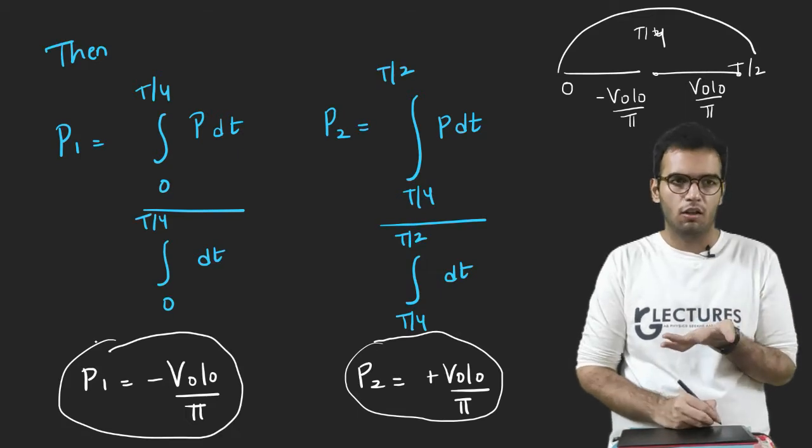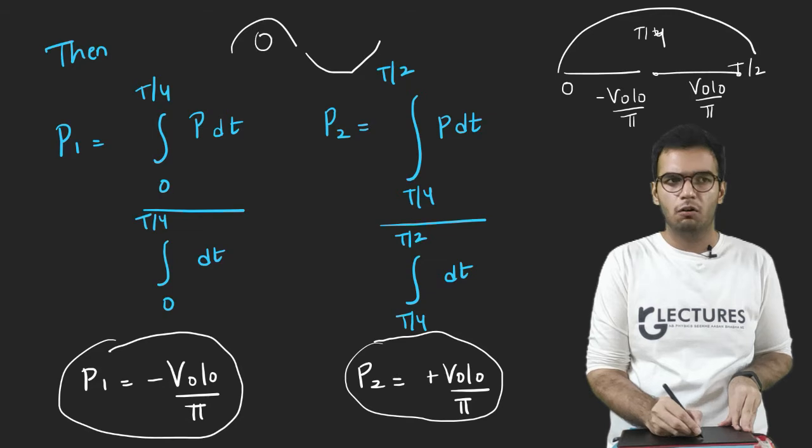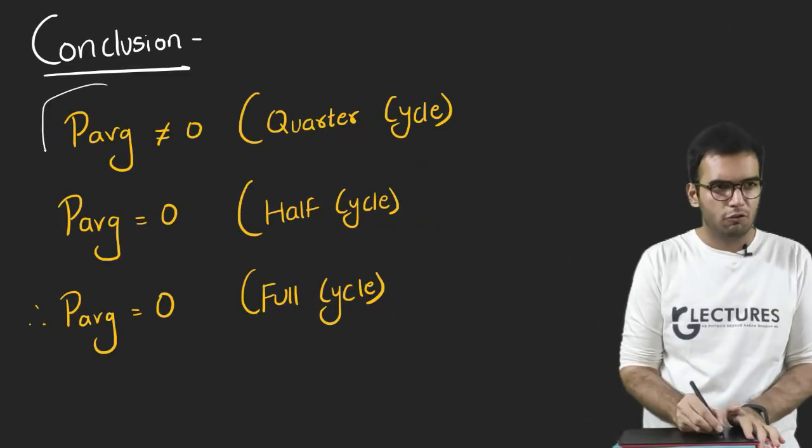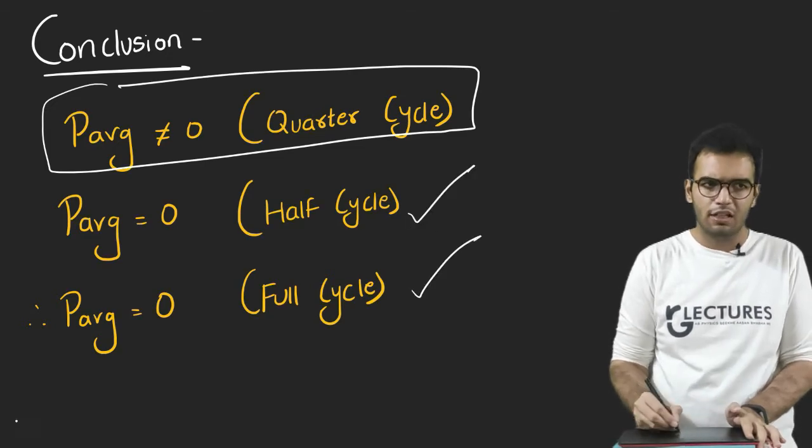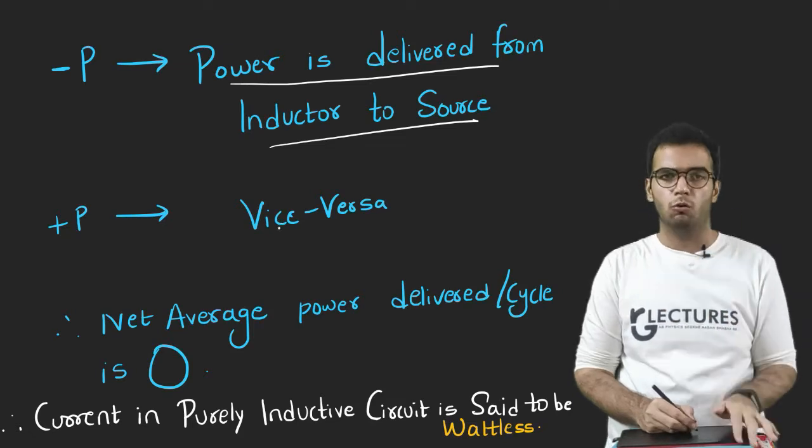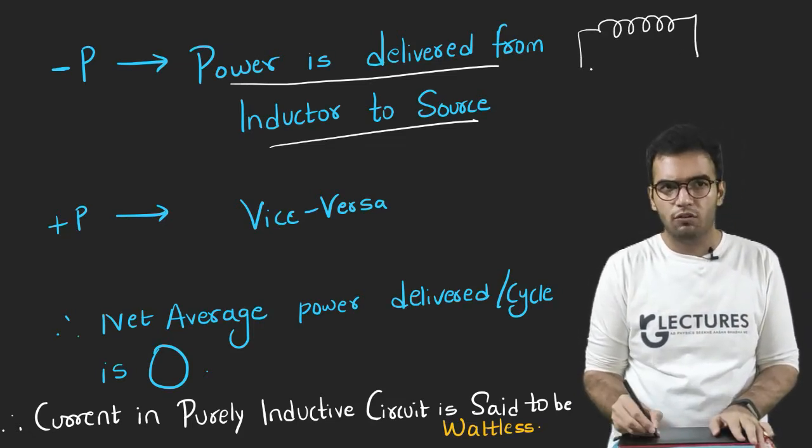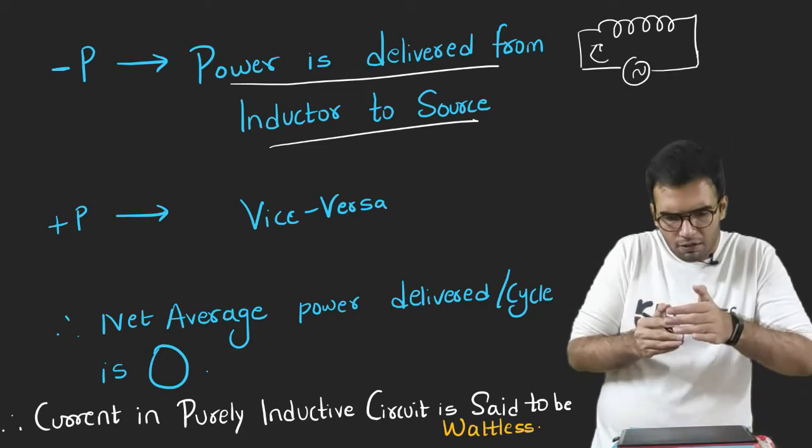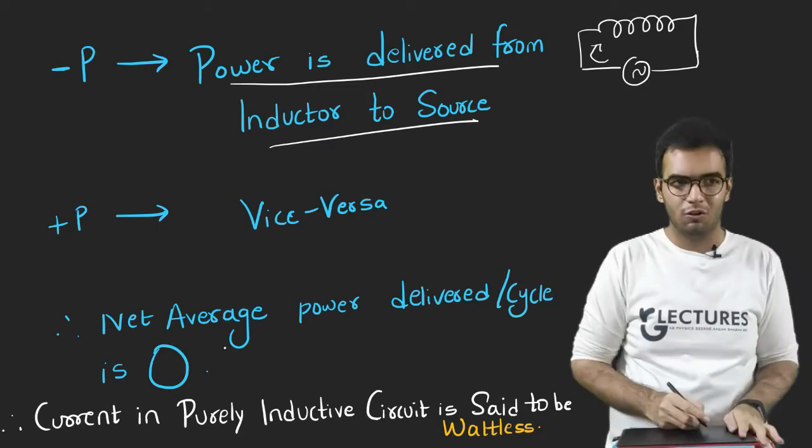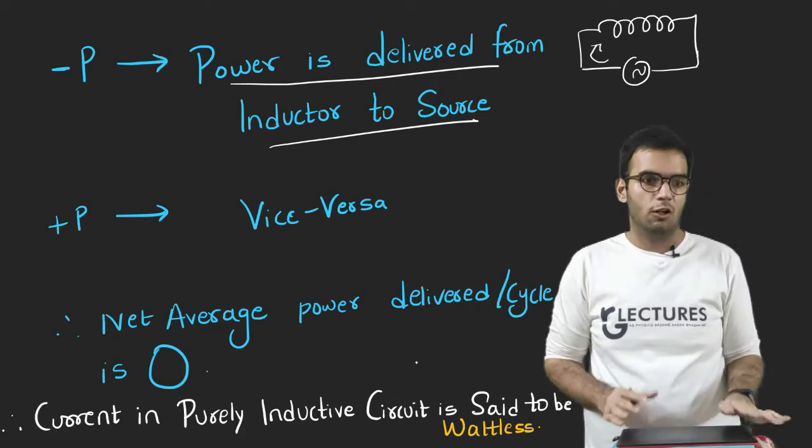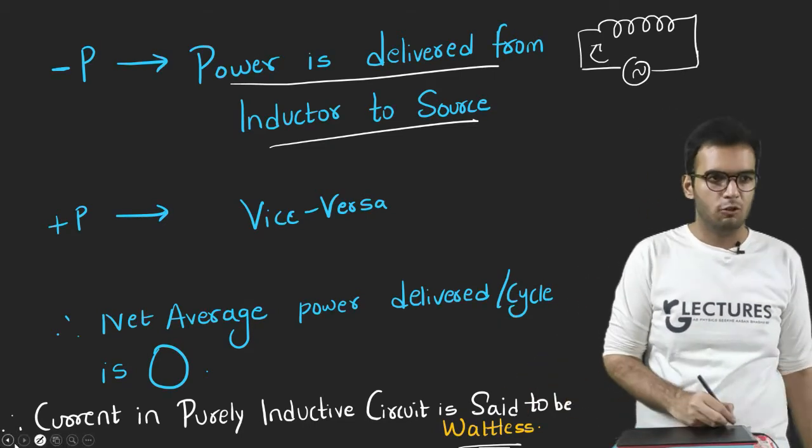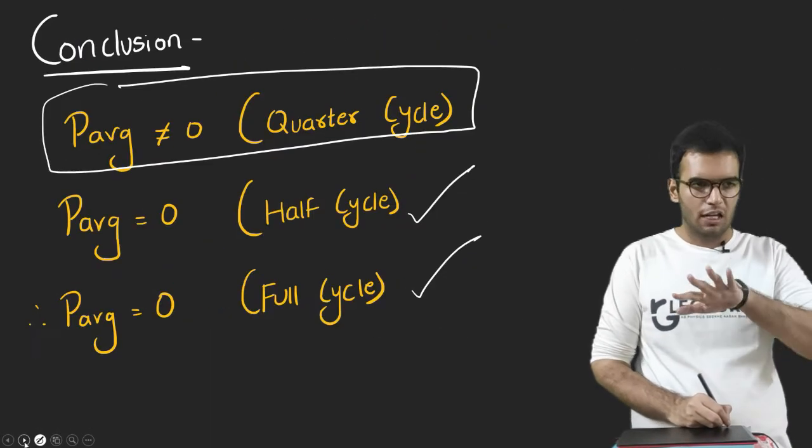And if you calculate the average power over a half cycle, then it will become zero because this is in minus, this is plus. So if over one half cycle, it is zero. So over another half cycle, it will be zero. So zero plus zero will be zero. But in one fourth of a cycle, it is not zero. So what is the conclusion? Power is not zero in quarter cycle. It is zero in half. So eventually, it is zero in the full cycle. What does this mean? Minus power means power is delivered from the inductor to source. And plus means it is delivered from the source to inductor. So basically, if inductor stores the energy in the form of electrical energy, so when it is storing the electrical energy, power is given from the source to inductor. When the inductor has sufficient energy, it gives power back to the source. So this continues. So net average power over one cycle is zero. But in a quarter cycle, it is not zero. So current in purely inductive circuit is said to be wattless because eventually power is zero. So that is the true point. In class 12, this reason is not stated. But in graduation, it is stated.